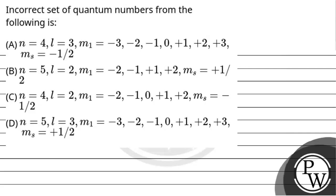Let's read the question. The question says: incorrect set of quantum numbers from the following is. First option: n=4, l=3, ml= -3, -2, -1, 0, +1, +2, +3, ms= -½. Second option: n=5, l=2, ml= -2 to +2 but 0 is not included, ms= +½.